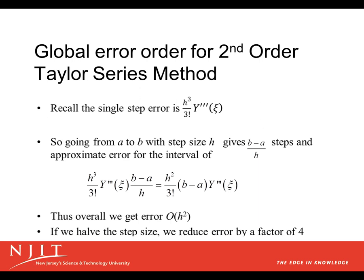So let's take a look at the global error order for the second order Taylor series method. Our single step error was h³/3! times Y''' somewhere in the middle, and that's because we took all our terms up through the h² terms. And so the first term that we leave out is h³/3!. Once again, as we did with the Euler method podcast, going from a to b with step size h gives (b-a)/h steps. And the approximate error for the interval from a to b is going to be the error in one step, h³/3! Y''', times the number of steps, (b-a)/h. That gives us a rough estimate.